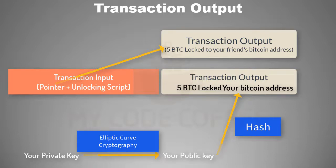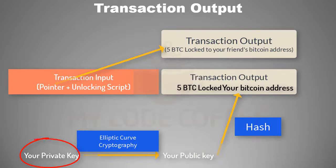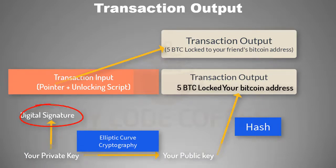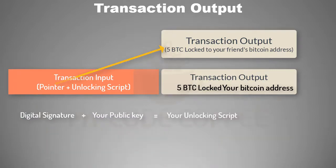Since you have the public key used to create your Bitcoin address, and you have the corresponding private key that created the public key, you can use the digital signature of your private key along with your public key to spend this new output. Now you are the owner of this five Bitcoin transaction output and only you can spend it.